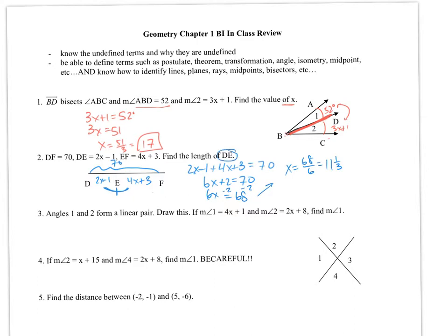Now to find the length of DE, here's DE, 2x minus 1. I'm going to say 2 times 11 and 1 third minus 1. Working all that out gives me a value of 21 and 2 thirds, or you could have kept it as a decimal as 21.67.